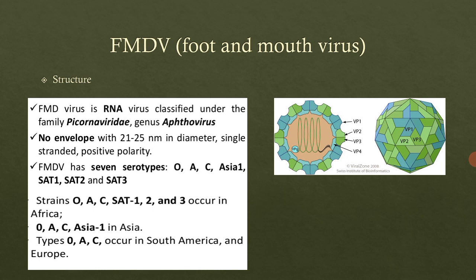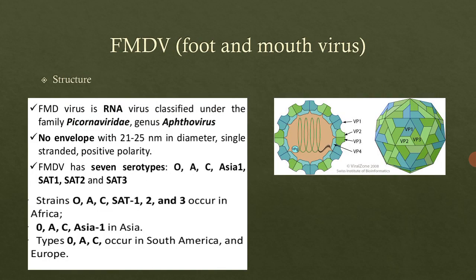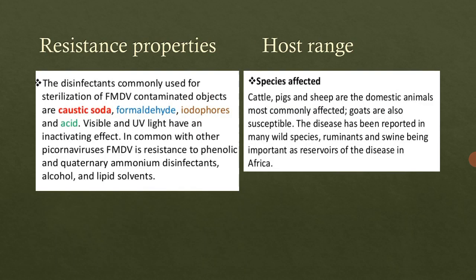Looking at the structure diagram of this virus, we can see the outer nucleocapsid, and on that the viral proteins are present. Along with the viral proteins, we can see the RNA genome — the single-stranded, positive-sense, linear, non-segmented RNA. The right-hand side picture shows a top view of the virus.